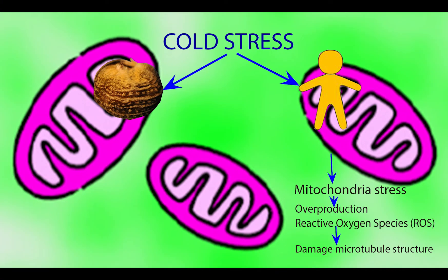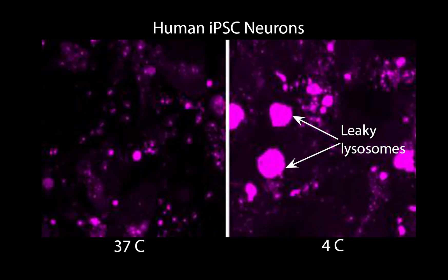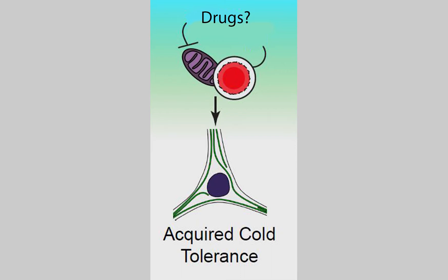These bioinformatics results guided us to do experiments through which we identified that mitochondria from ground squirrel neurons respond very differently from mitochondria of human neurons. Specifically, the mitochondria response from human neurons leads to an overproduction of reactive oxygen species, which could potentially damage microtubule structure. In addition, this overproduction of reactive oxygen species from mitochondria could cause changes in lysosome membrane permeability. Proteases inside the lysosome may leak out, causing further damage to microtubule structure.